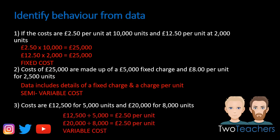For the final question, £12,500 ÷ 5,000 units gives a unit price of £2.50. Then £20,000 ÷ 8,000 units again gives the same price per unit of £2.50. Therefore this is a variable cost. With a variable cost, the price per unit stays the same — it will always be £2.50 no matter whether we produce just one or 10,000 items.